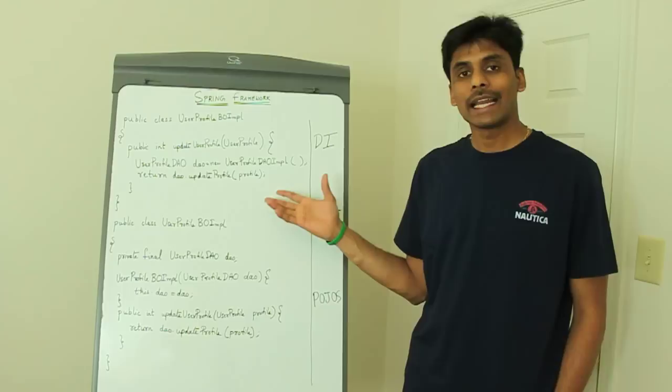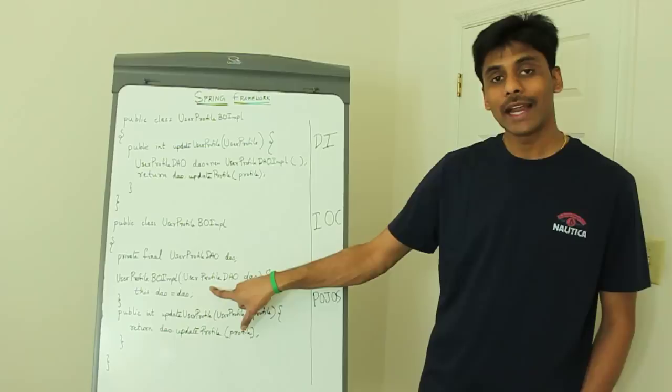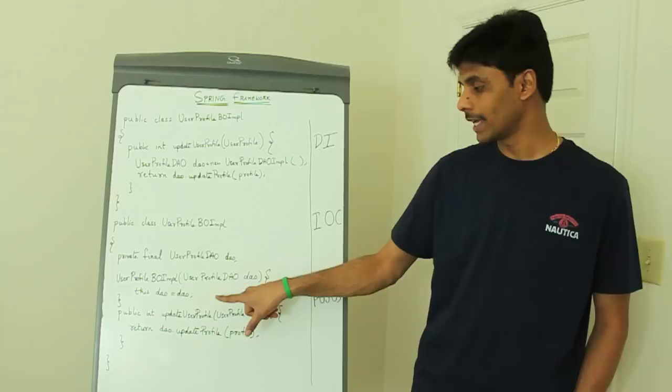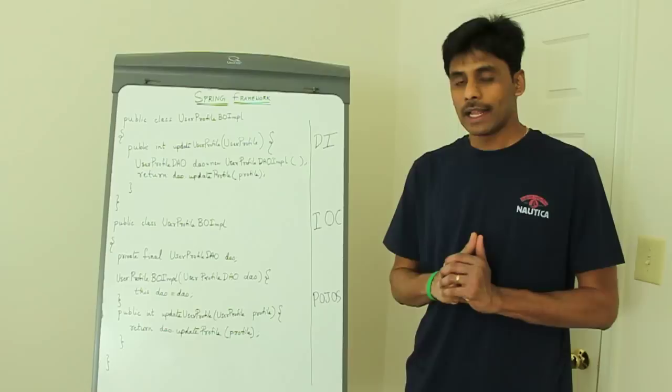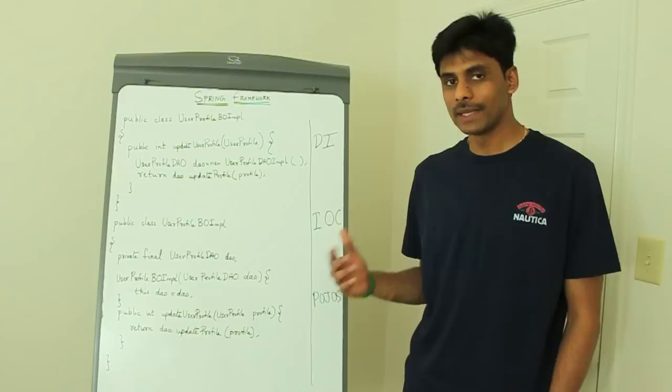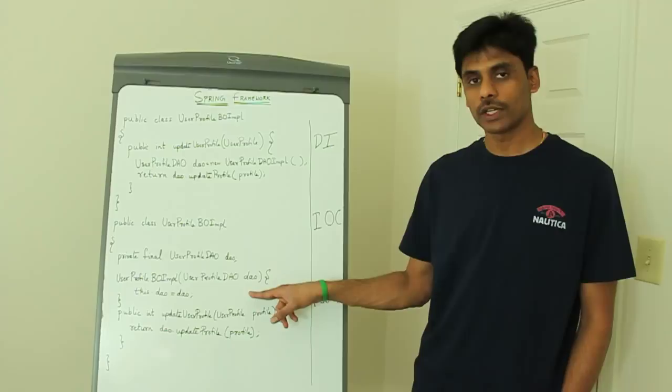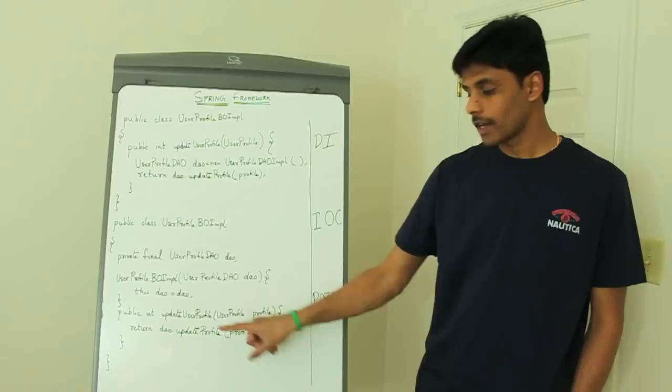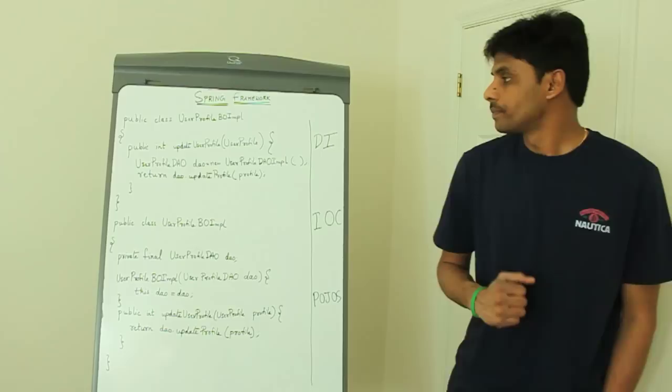Now instead of the business class handling this dependency creation, we can ask Spring to do this for us by simply declaring the user profile DAO at a class level. And we create a constructor, the business layer class constructor, which takes the DAO as the parameter. And we then provide Spring with the XML configuration file. Spring at runtime will read this XML configuration file, and it knows that the business layer class needs or depends on the DAO layer class to work. It creates an instance of the DAO class for us, and then it invokes the constructor of the business layer class by passing in the instance of the DAO. And now our update profile method on the business layer class can focus on the business logic instead of worrying about creating the services it requires, which in this case is the DAO class.